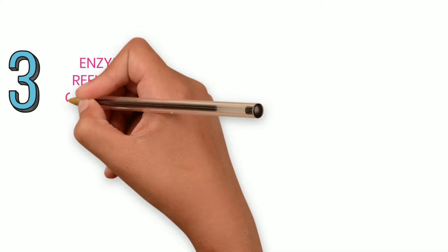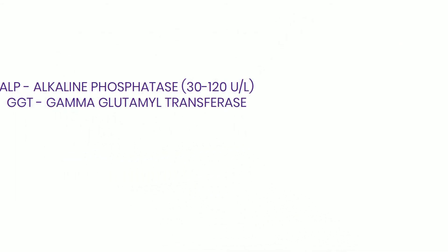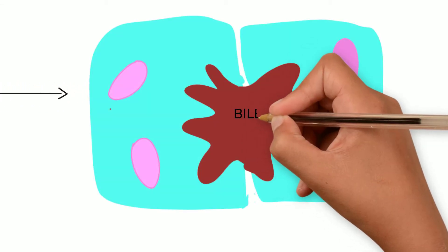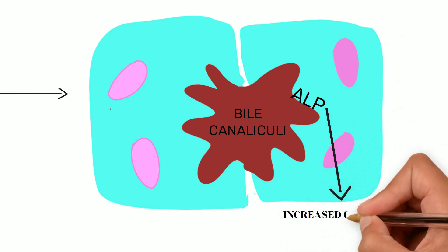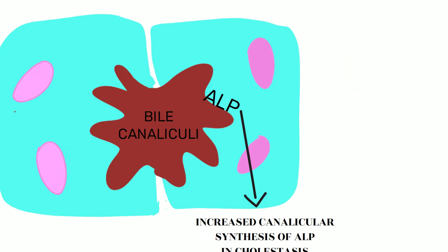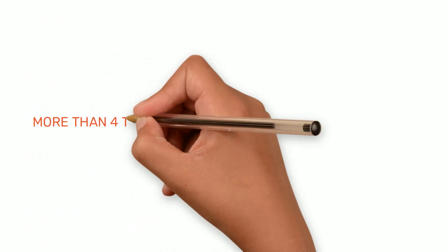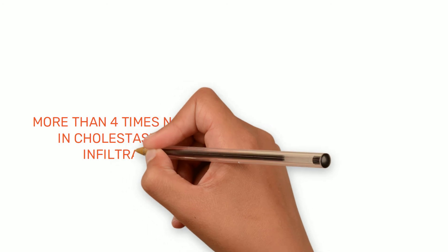The third group consists of enzymes reflecting cholestasis, which includes ALP (alkaline phosphatase) and GGT (gamma-glutamyl transferase). ALP is present in the canalicular membrane of the hepatocyte, so in cholestasis there is increased canalicular synthesis of ALP, causing elevated ALP. However, ALP elevation is not specific for cholestasis — more than four times normal levels are seen in cholestasis and infiltrative liver disorders.